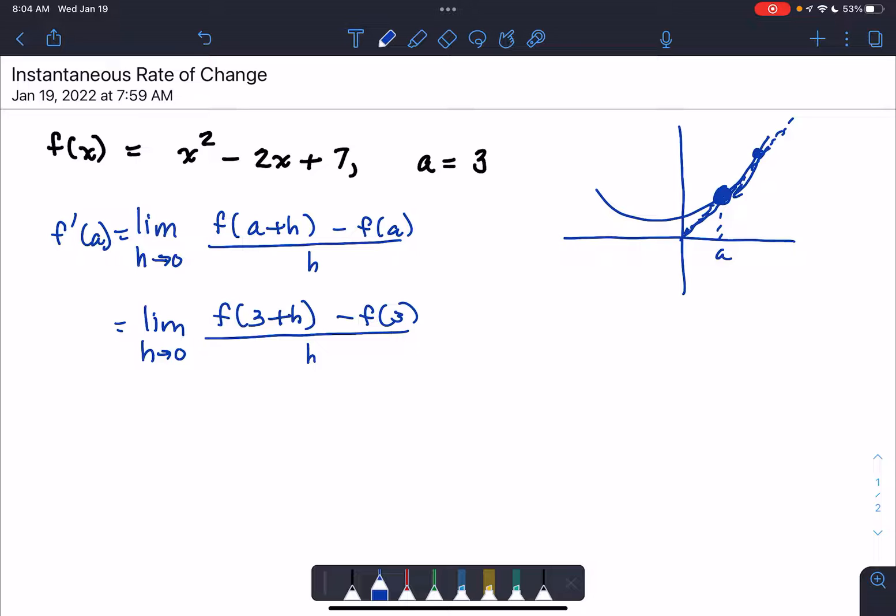It came from function f, but it's not function f, so it's a derivative of f, it's something related to f. So our instantaneous rate of change here will be f prime of 3.